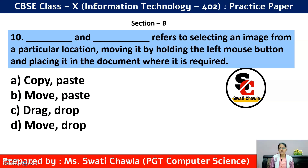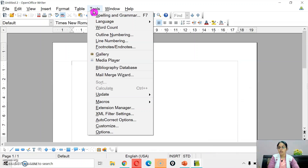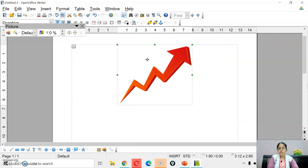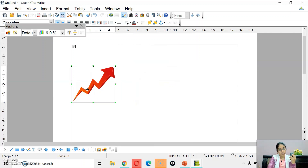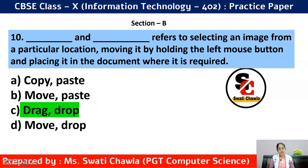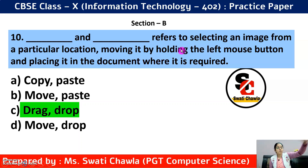Question 10: Dash refers to selecting an image from a particular location, moving it by holding the left mouse button, and placing it in the document where required. For example, if I insert an image and hold the left mouse button and drag it to a new location, that process is called Drag and Drop. The correct answer is option C — Drag and Drop. Cut-paste would remove the original; copy-paste creates a copy; but here it is drag and drop.